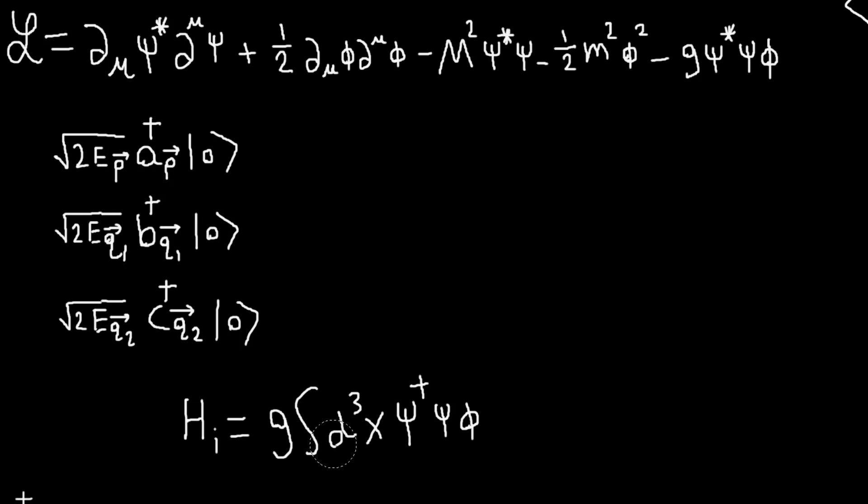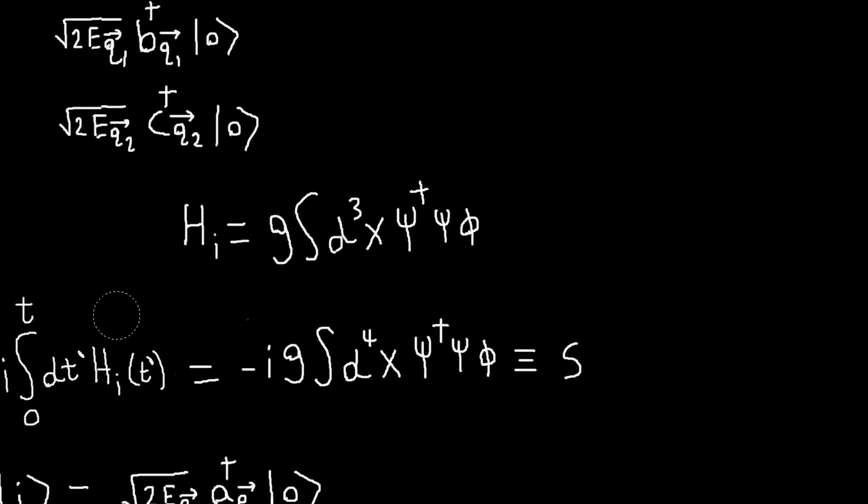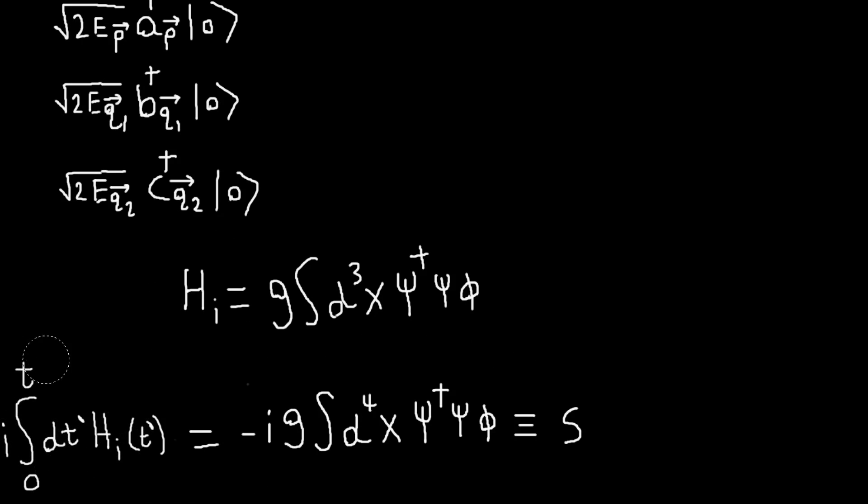And so, like I said last time, we had that operator, I wish I had written it down, but it's in the previous video. The evolution operator, involving basically time ordering of e to the minus i integral of Hi. And we Taylor-expanded that operator, assuming that this Hi is small, and the lowest-order term was this term.